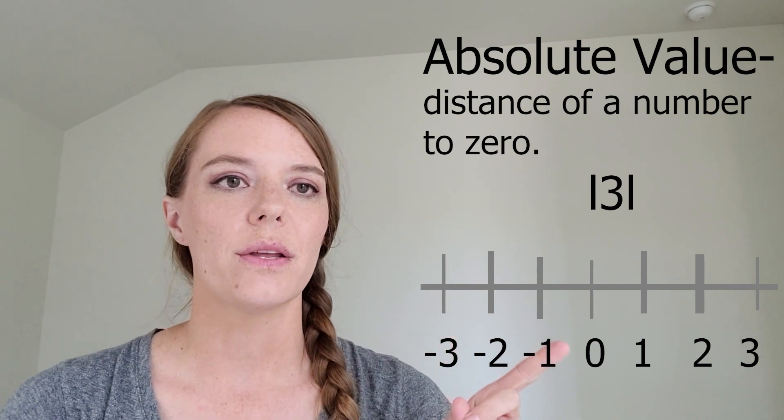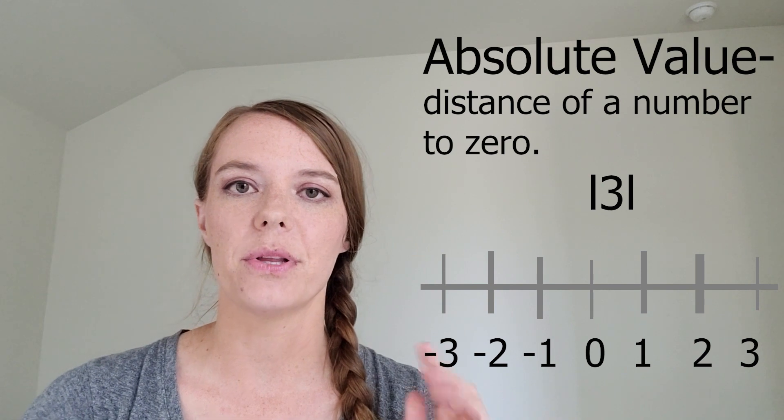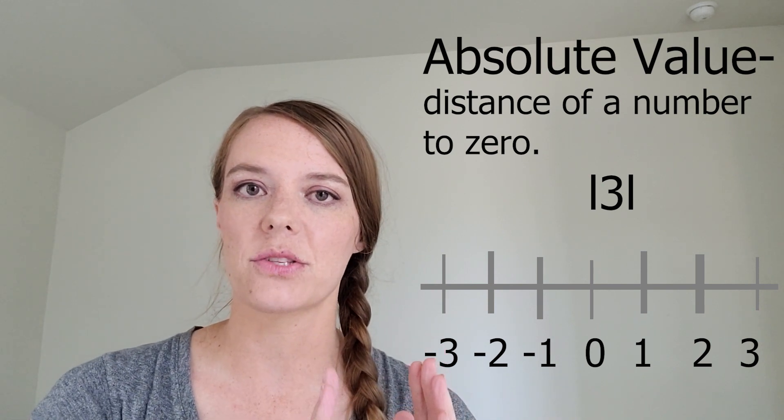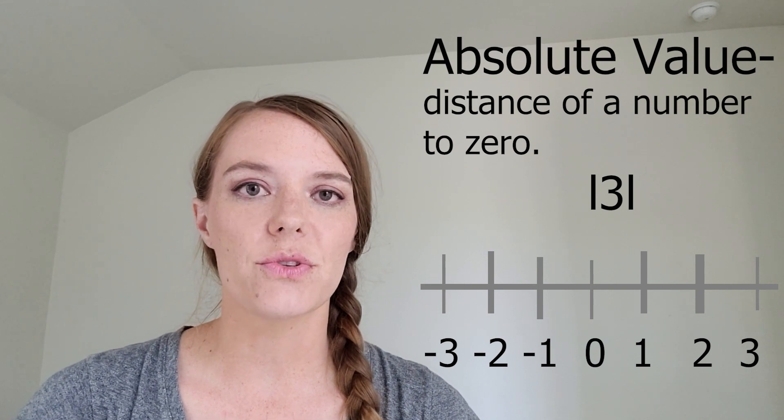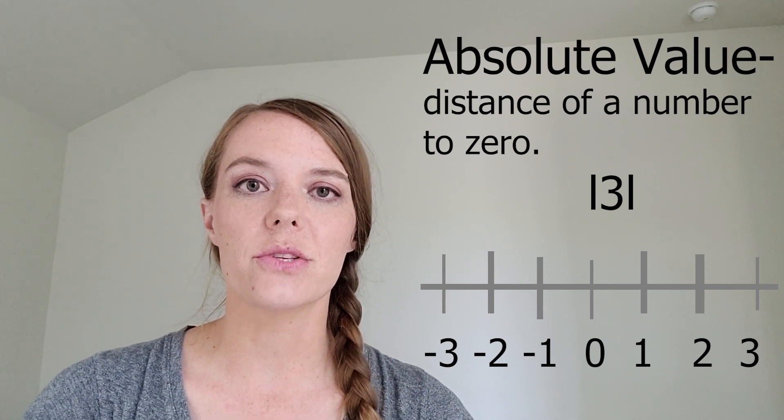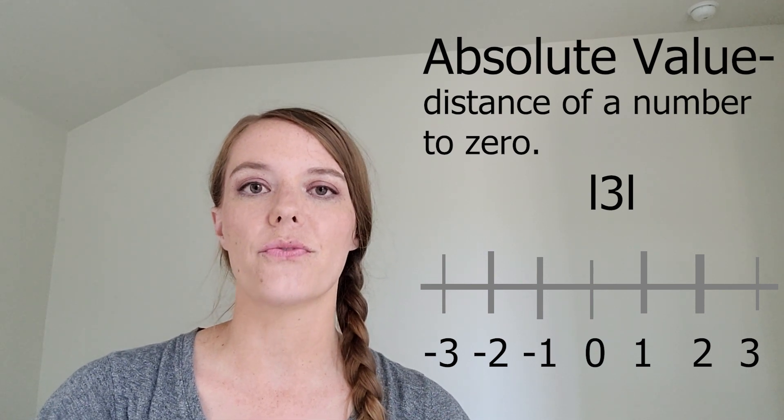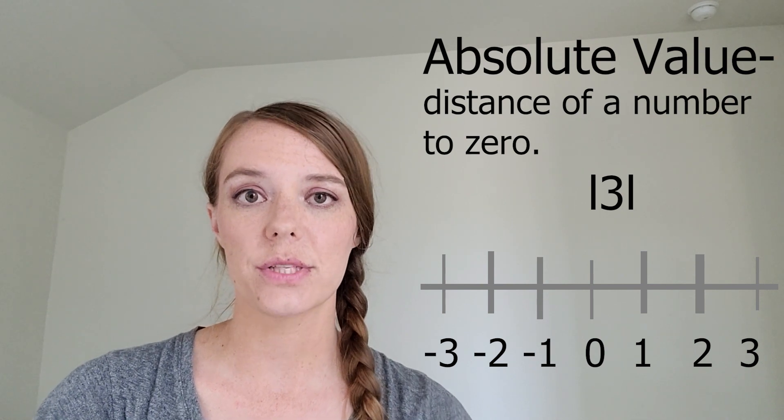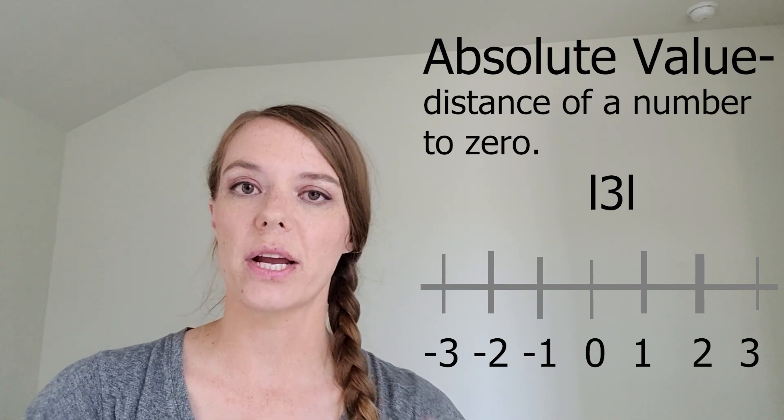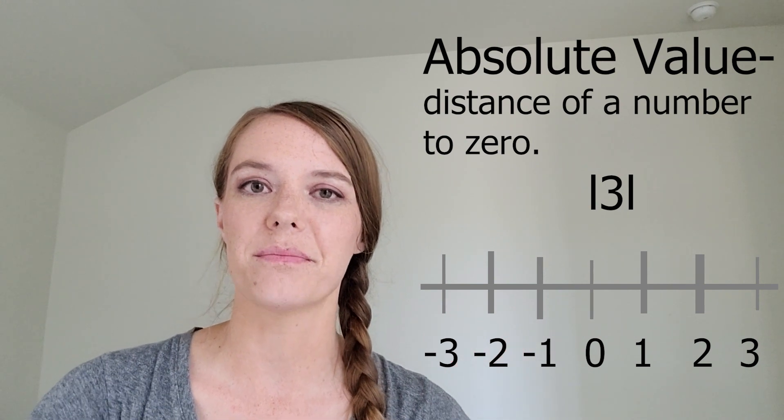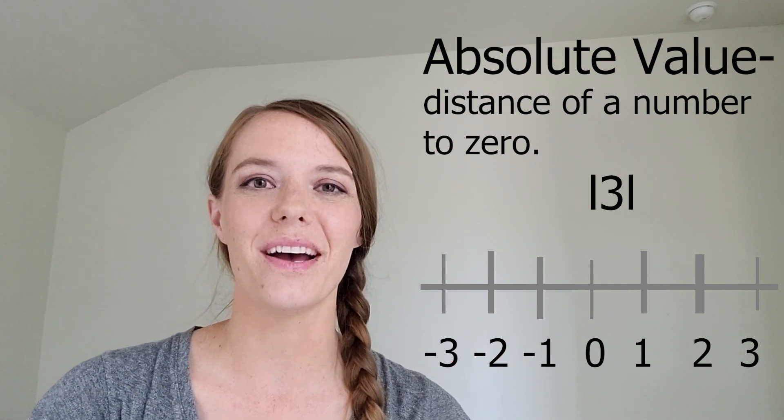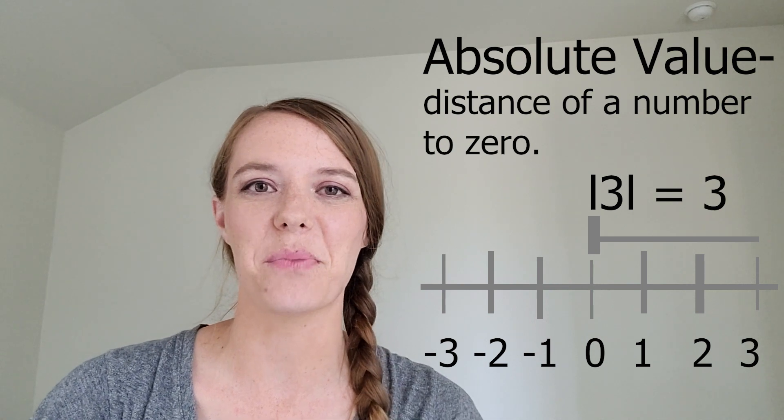So the number three, I'm going to put the absolute value symbols next to it or around it. And what we need to do to find the absolute value of three is just figure out the distance from that number to zero. So just check out the number line and how far is it away from zero? You got it, three. It almost seems a little bit too easy.